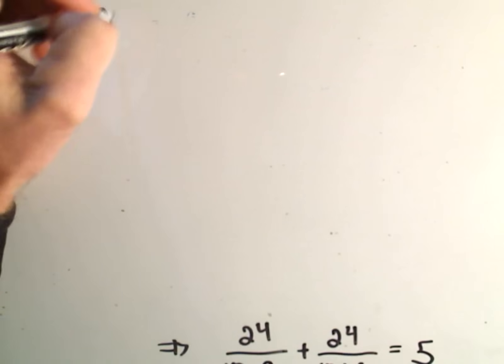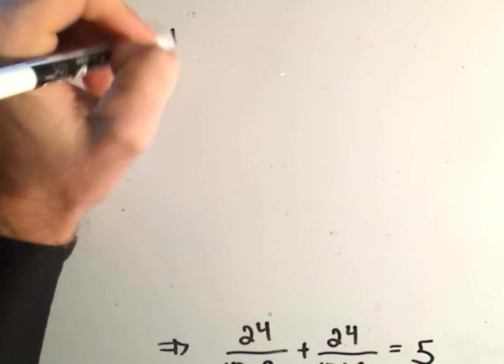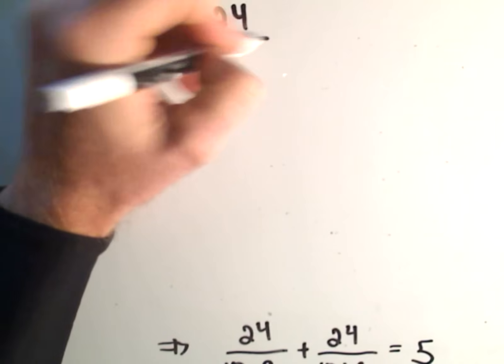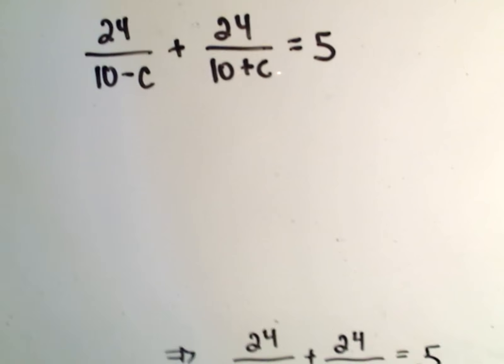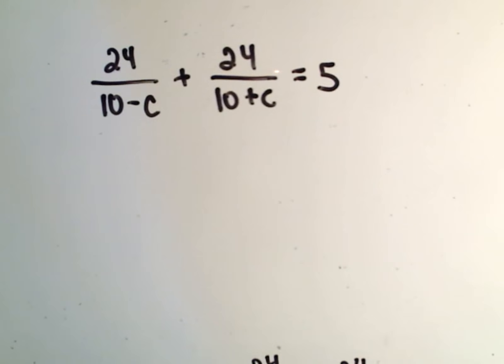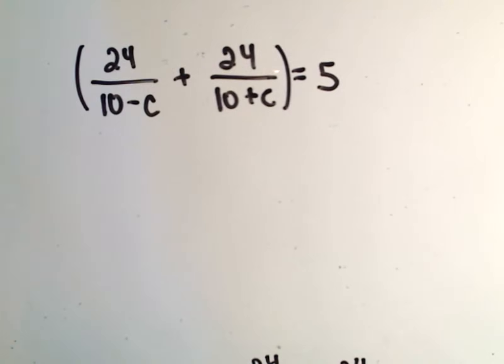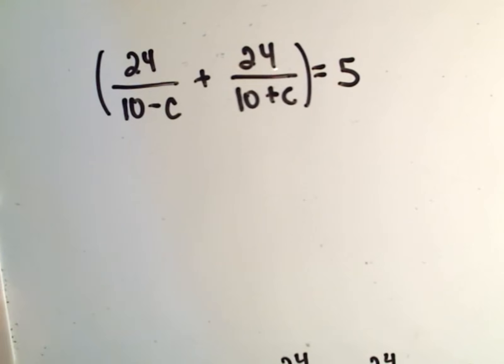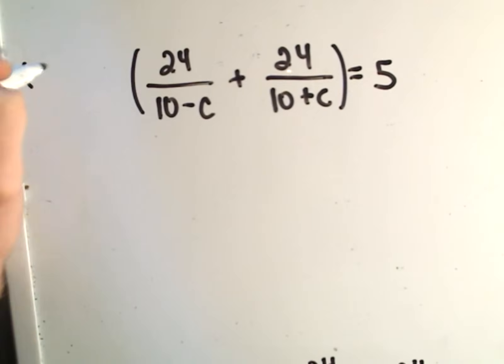So it's going to be 24 over 10 minus C plus 24 over 10 plus C equals 5. And what I would do at this point is, I would get rid of the fractions. If you think about the least common multiple of 10 minus C and 10 plus C, basically if we multiply both sides, let's scoot this over a little bit,